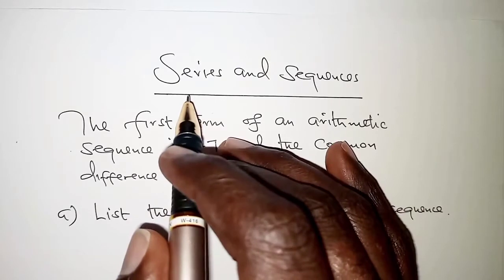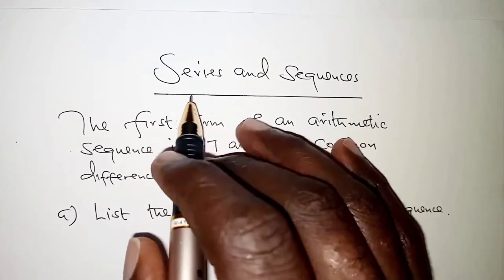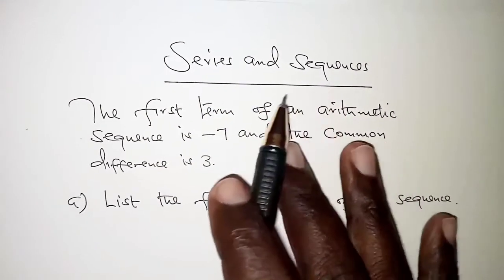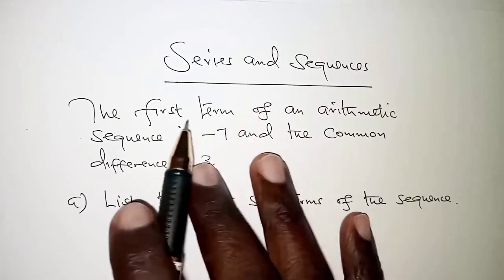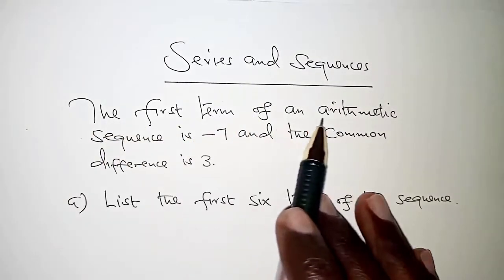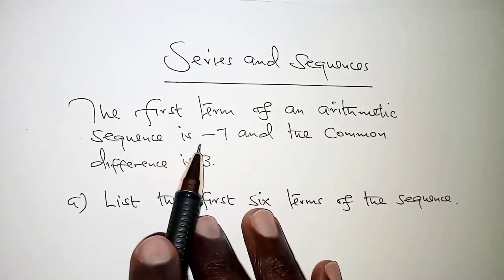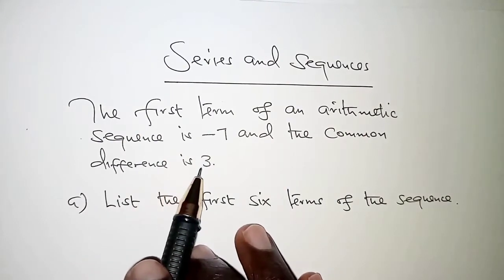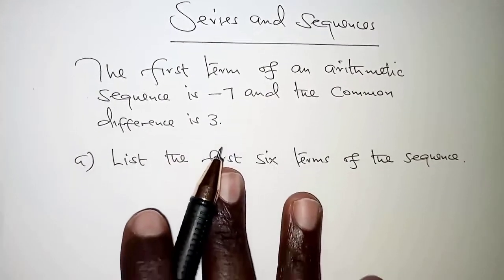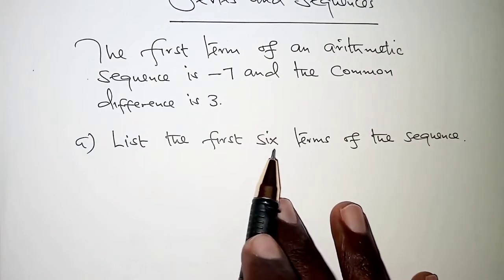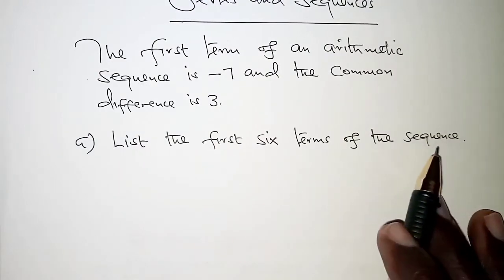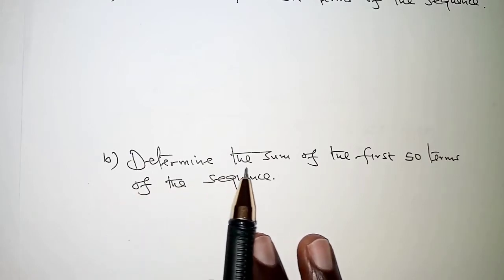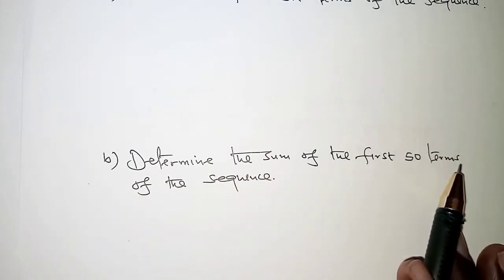Welcome to today's presentation. Today we are going to look at series and sequences. The question reads: the first term of an arithmetic sequence is negative 7 and the common difference is 3. Part A: list the first six terms of the sequence, and part B: determine the sum of the first 50 terms of the sequence.